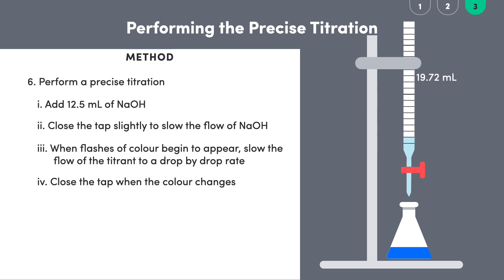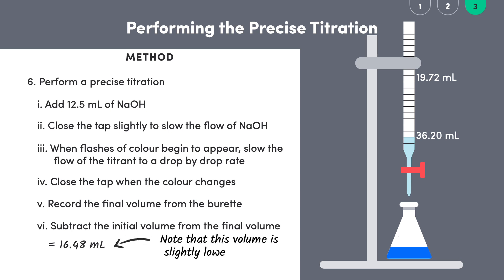So after that key last drop, record the final volume of the burette, here it's 36.20 milliliters, and subtract from this the initial volume, which was 19.72 milliliters, to get 16.48 milliliters as the precise volume of titrant required to reach the endpoint. Note that this volume, as expected, is slightly lower than our estimated volume.